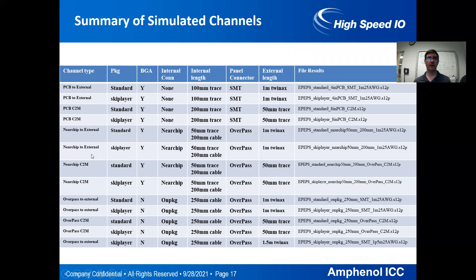This chart is a summary of a bunch of different channel configurations — 12 to 14 channels ranging from the best possible channel given these models to a much lossier channel that's on the edge of what might work.